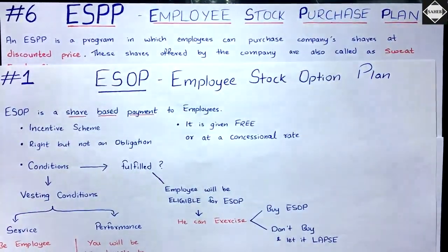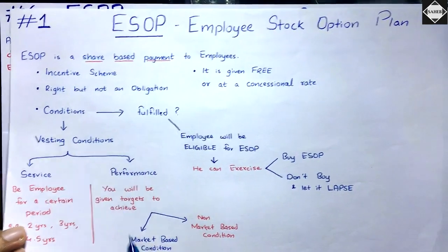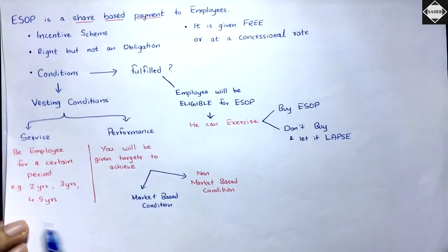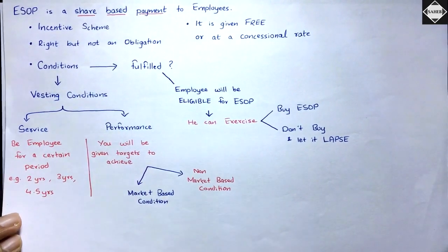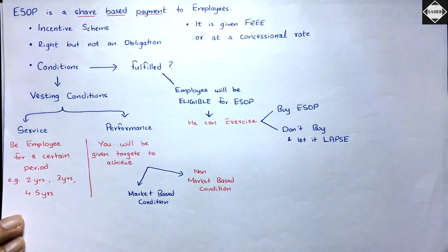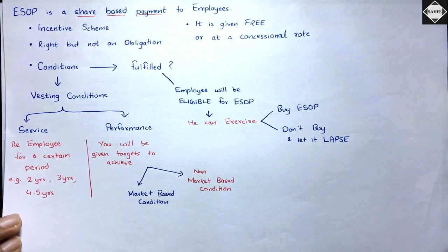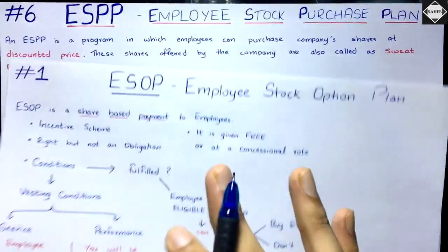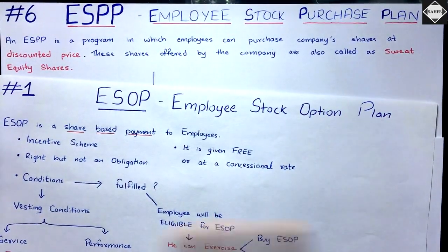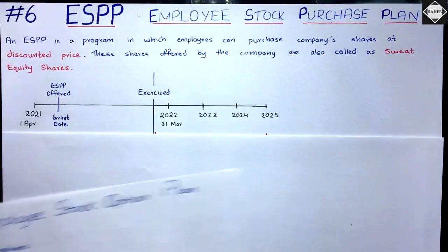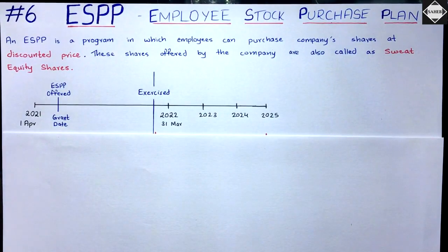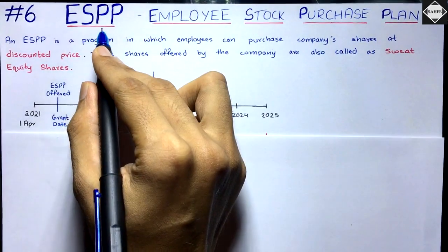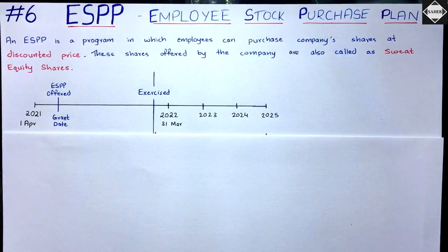The main difference between ESPP and ESOP is the conditions. In ESPP, there are no conditions. In ESOP, there are vesting conditions — eligibility conditions such as service conditions or performance conditions. Only after satisfying those conditions do the employees' options become eligible for exercising. In ESPP, there are no such conditions — employees are directly able to purchase the company shares under this scheme.